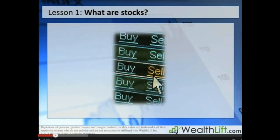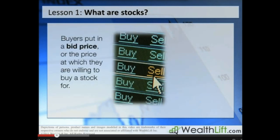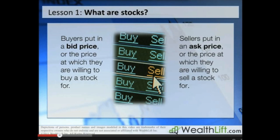Buyers put in a bid price — a price they are willing to buy the stock for — while sellers put in an ask price — a price they are willing to sell the stock for. The stock exchange brings these buyers and sellers together and settles the transaction in a matter of milliseconds. When putting in buy and sell orders with a stock broker, you can choose the minimum ask price for selling or maximum bid price for buying, so you only make trades you are comfortable with.